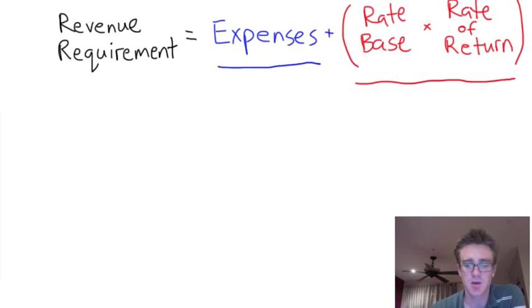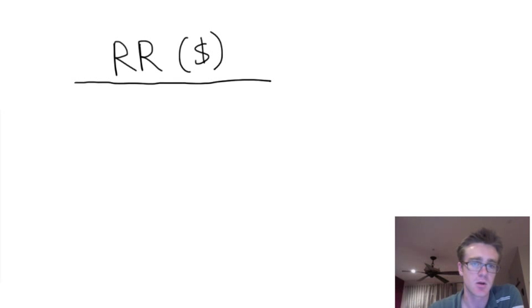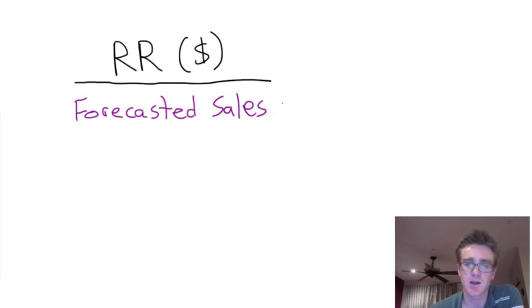First, you take the revenue requirement. I'm just going to abbreviate this now as RR and remember that this is in dollars. And we simply just divide this through by some forecasted amount of sales. So, if we're dealing with an electric utility, this forecasted sales is going to be in some unit like kilowatt hours, which is a unit for electricity. For natural gas, we're dealing with maybe in something like therms, which is a unit for natural gas.